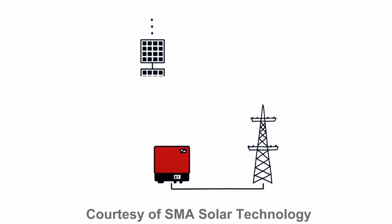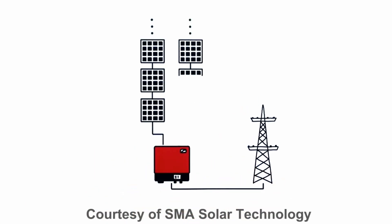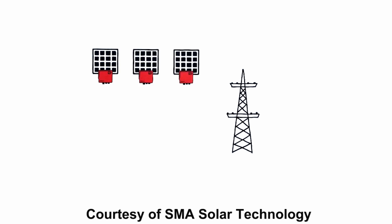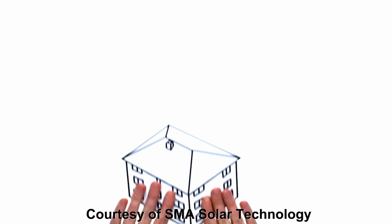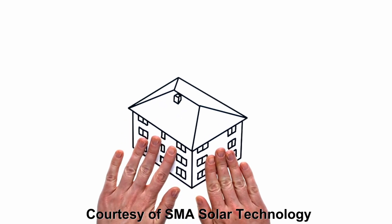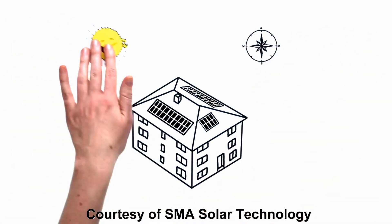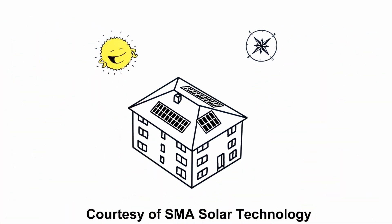The difference between microinverters and string inverters is that string inverters can transform the power of several connected modules. In contrast, microinverters transform the power of each module right at the source, and that means you can set up and monitor each module individually.